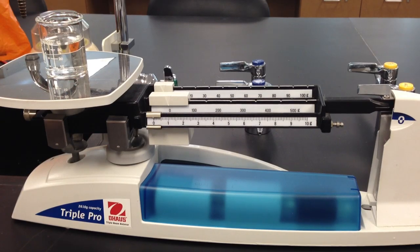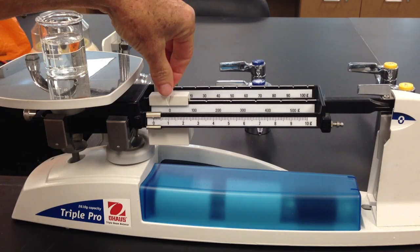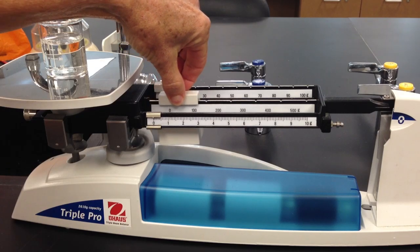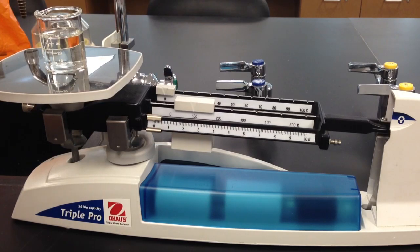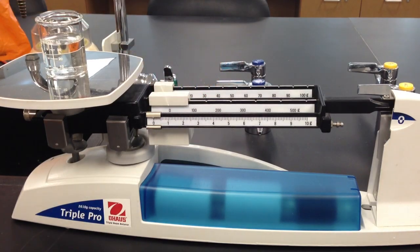We put our beaker on the platform and need to determine how much it weighs. Start with your heaviest beam, the hundredths beam, and move the weight to the next groove, the 100 gram mark. We see that's too much, so the beaker does not weigh 100 grams. We're going to move it back to zero.